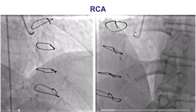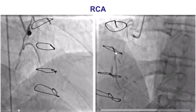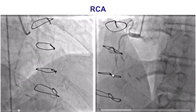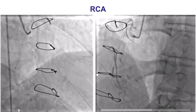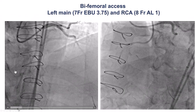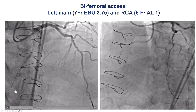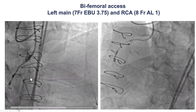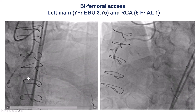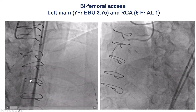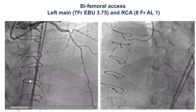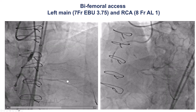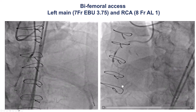On angiography, the right coronary artery is diffusely diseased and heavily calcified, and the occlusion is at the distal segment, with the posterolateral and PDA reconstituting through collaterals — both epicardial and some septal collaterals as well.